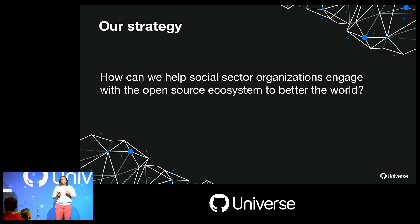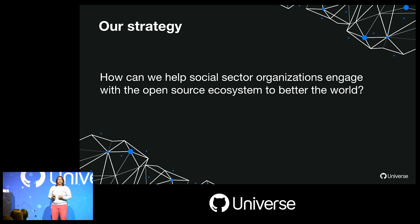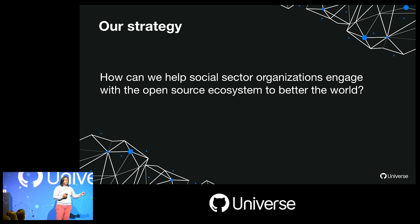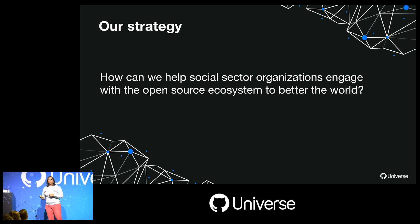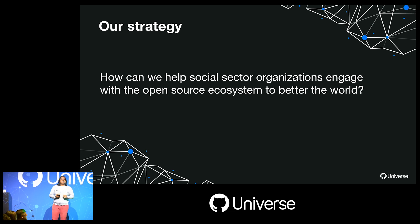When we think about how to ensure the open source ecosystem betters the world, our approach has morphed into: how can we help social sector organizations engage with open source to better the world? That means looking at organizations doing core social justice work and helping them use open source — whether to build better programs, increase operational efficiency, or build internal technical capacity.